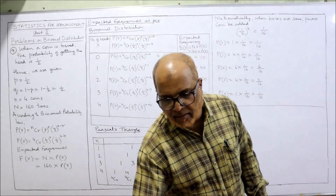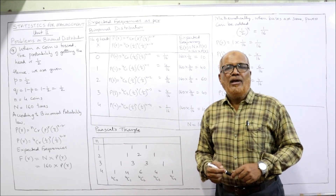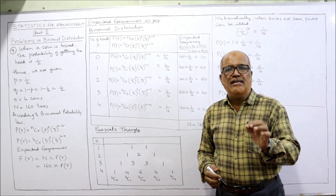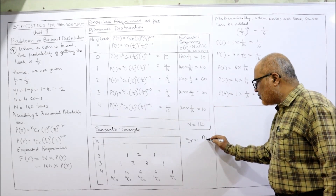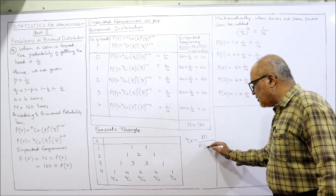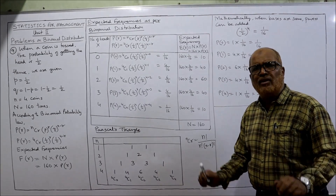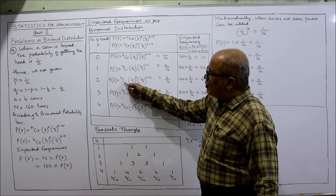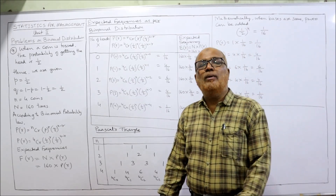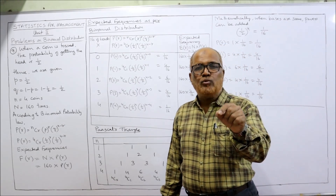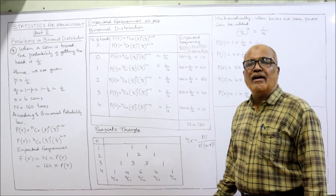The NCR values can be calculated by applying the formula NCR = N! / (R! × (N−R)!), or by using Pascal's triangle. Since we need to calculate NCR five times (for 4C0 through 4C4), applying the formula five times would be time consuming. To save time, it is better to use Pascal's triangle to find the values of NCR directly.